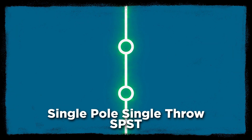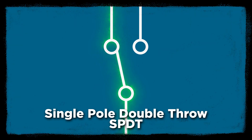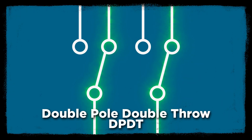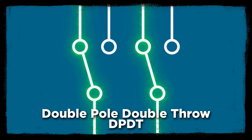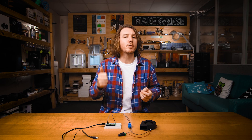A single throw can only switch its single contact from on to off and back again. A double throw has two output contacts per pole and will alternate between its two contacts when the relay is on or off. For example, when contact A is turned off, contact B gets turned back on, and vice versa. Finally, the control terminals have a few names as well: normally open, normally closed, and common — we'll get to those later.